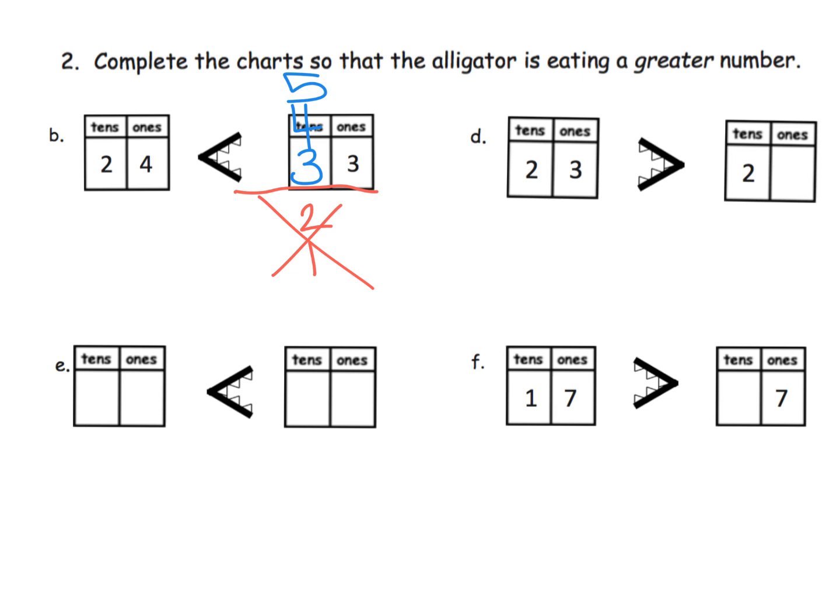The one thing I'm going to call you out on is problem F. This one's kind of tricky because we know that this number being one ten and seven ones, so seventeen, is greater than this number. If you think about it, can we put a two here? No. Can we put a one there? No. We can't put a three. What is the only digit that we could put right here? It would be a zero, as in seventeen is greater than seven.